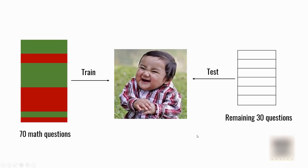But there is one problem with this approach also. Let's say the 70 math questions you give this person were all algebra, and the remaining 30 questions are from calculus. He hasn't seen that topic before, so he might not perform well. This technique kind of works but it's not very perfect — that's why we have K-Fold cross-validation.